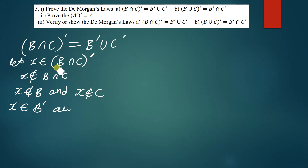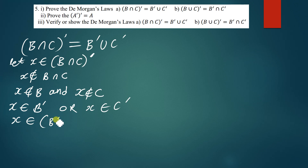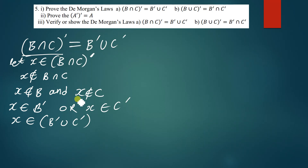If x is not a member of B, it means x is a member of B'. And if x is not a member of C, it means x can be a member of C'. So if x is a member of B' or C', this implies that x can be in the union set of B' and C'. Therefore x is a member of B' ∪ C', and the left-hand side is equal to the right-hand side.